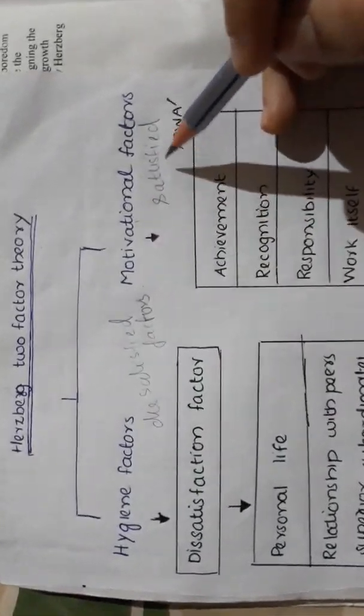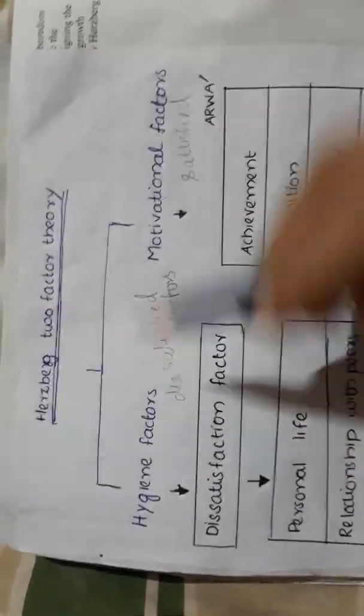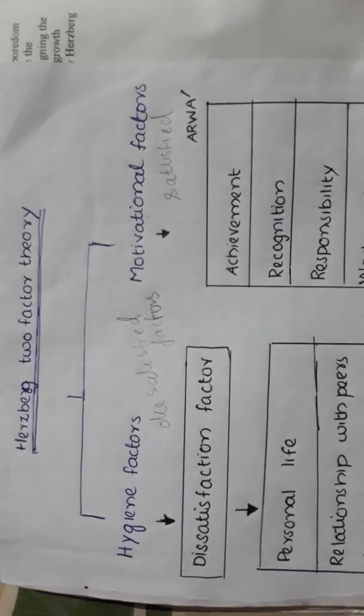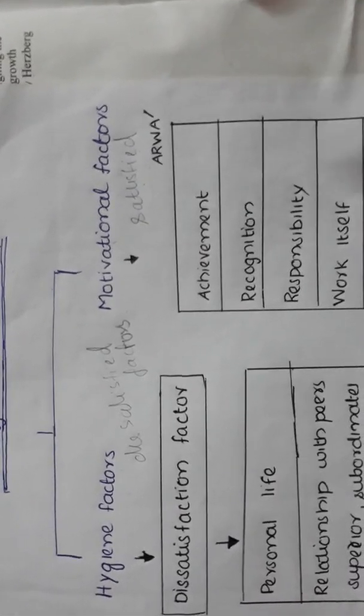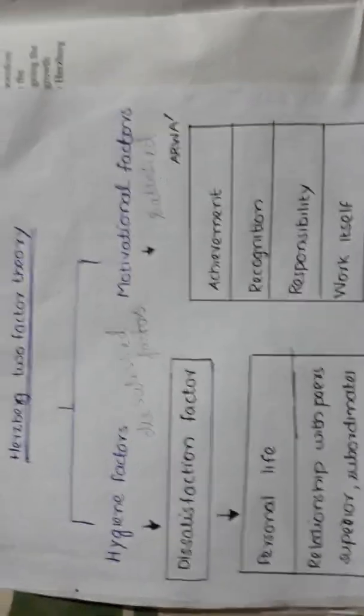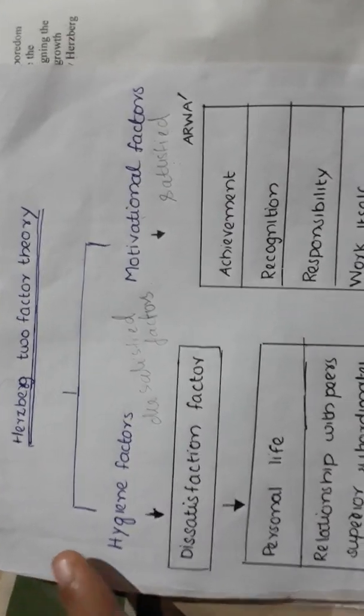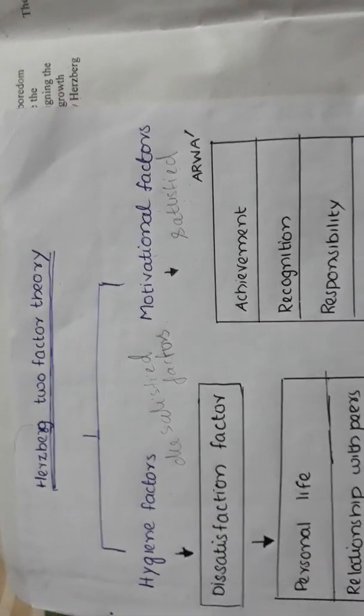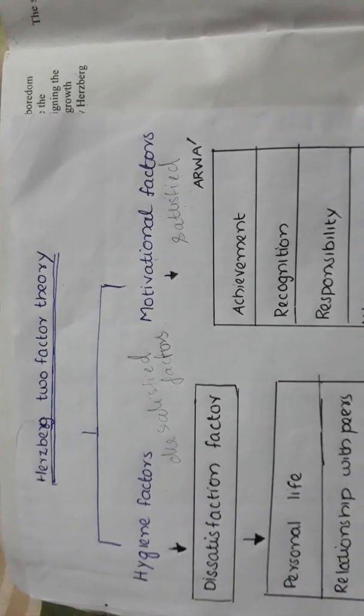If a factor is causing you satisfaction, that is known as motivational factors. If the factors in an organization are not causing any kind of satisfaction—if you feel that better opportunities were available and you could have done something better—then it is known as hygiene factors or dissatisfaction factors. Part 2 will be continued with this explanation. Thank you. If you have any comments or suggestions, they will be accepted. Please subscribe to the channel.